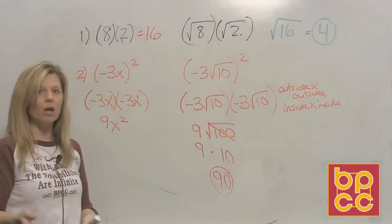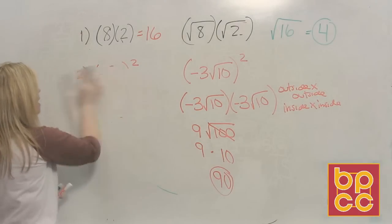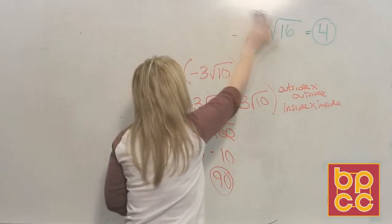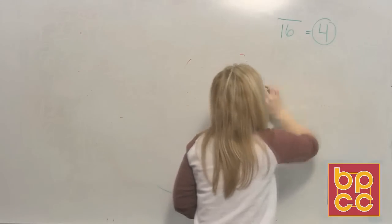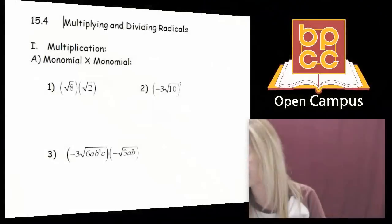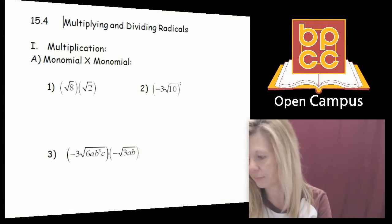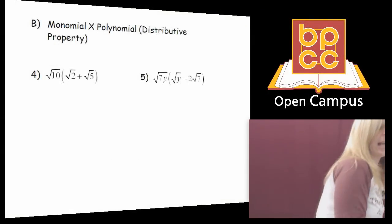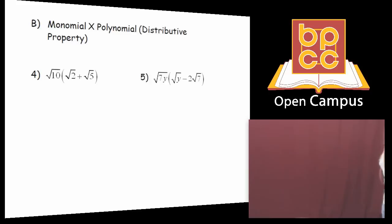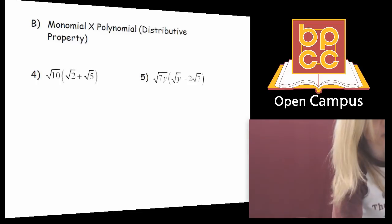Now, not everything we multiplied this semester were monomials. Remember there are binomials and trinomials. Let's look at some other examples in our notes. Example four: we want to multiply a monomial, square root of ten, times a binomial, square root of two plus square root of five. We're going to relate this back to what we've already learned.